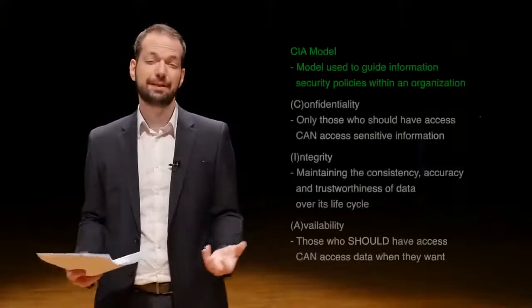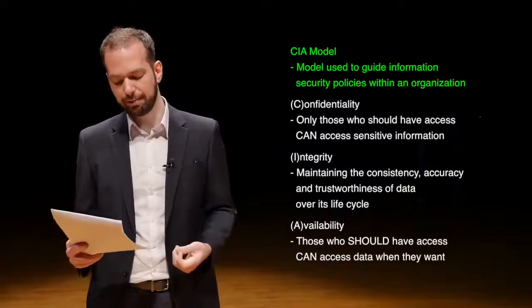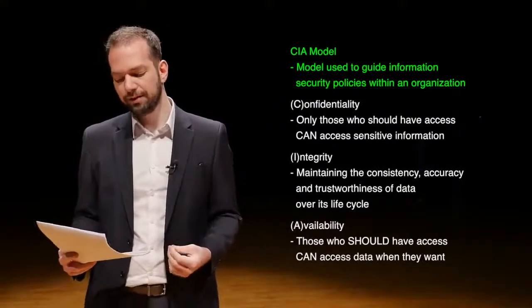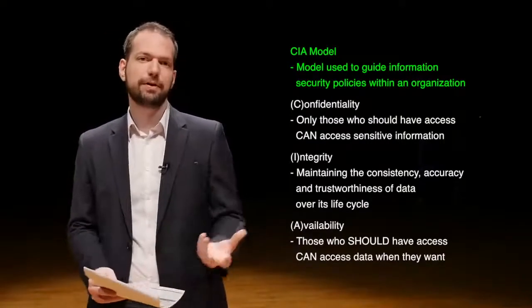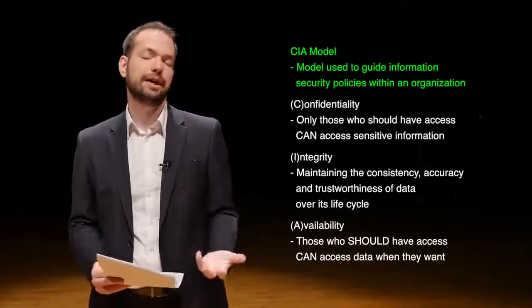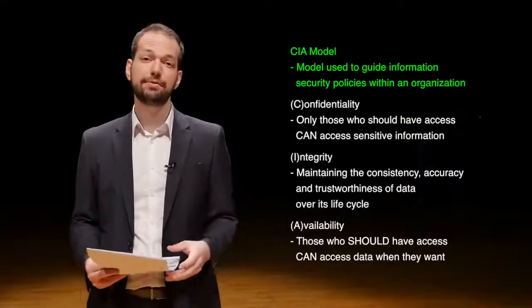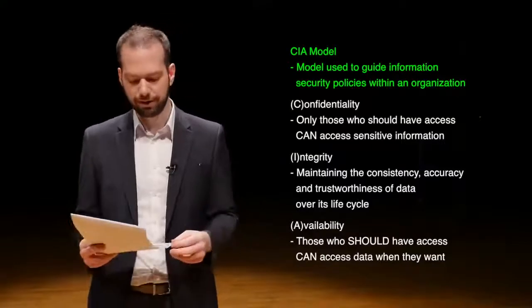Whenever we're talking about cyber security, there's a relatively easy model you can think of — it's called the CIA model. It's a model used to guide information security policies within an organization. There are a lot of different models, and some are better than the CIA model, but it's very easy to understand so you can start thinking about security.